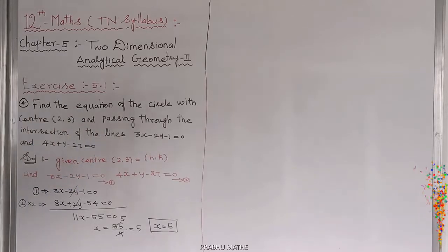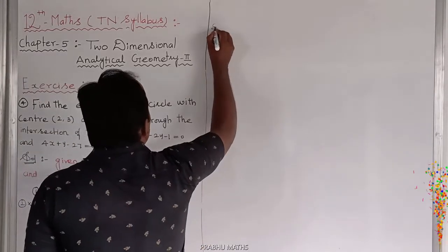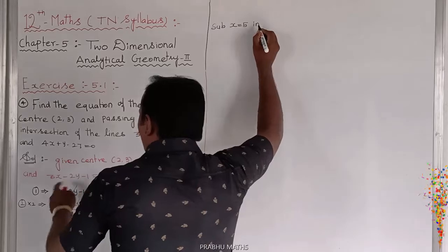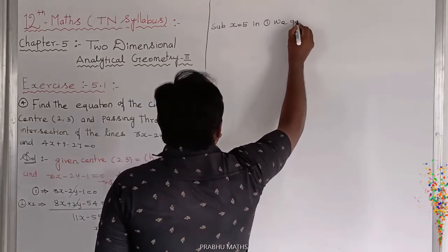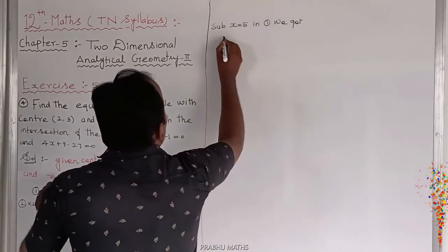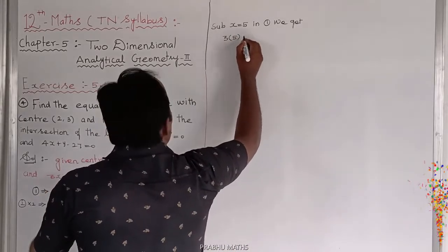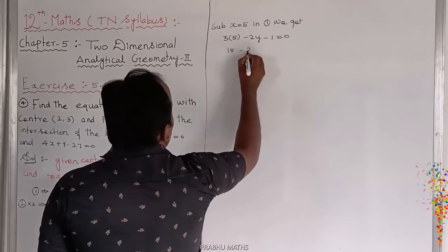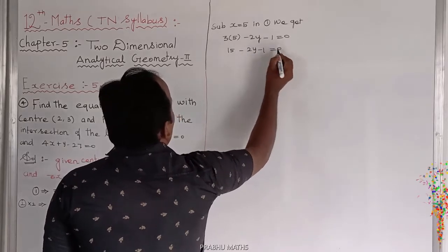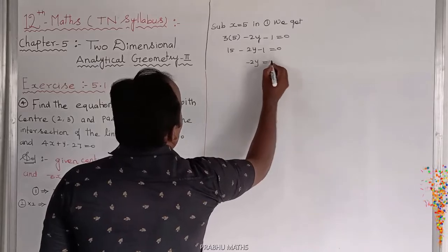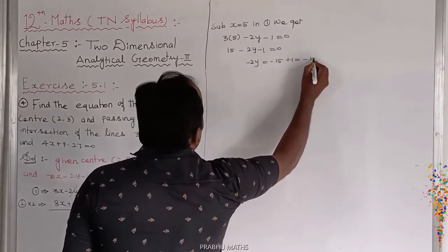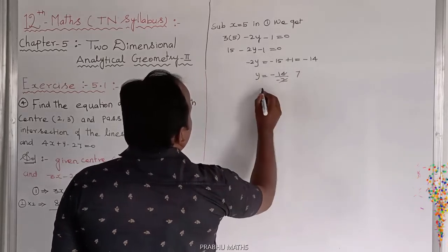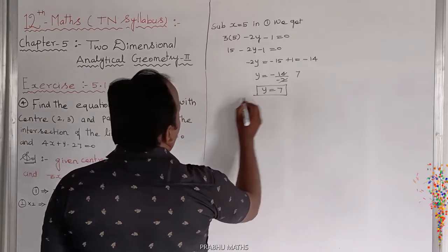To find Y, substitute X equals 5 into equation number 1. We get 3 times 5 minus 2Y minus 1 equals 0, which gives 15 minus 2Y minus 1 equals 0. So minus 2Y equals minus 14, therefore Y equals minus 14 divided by minus 2, which gives Y equals 7.